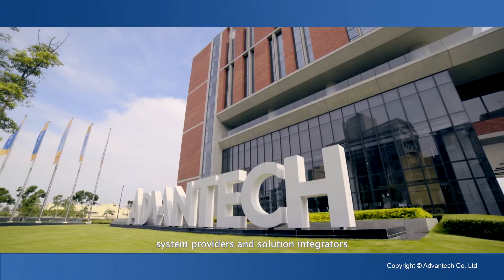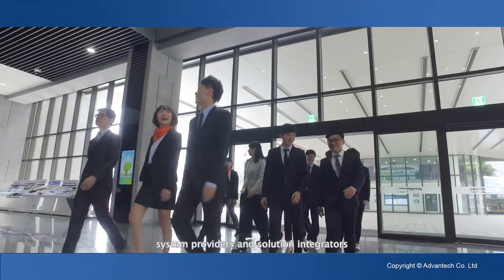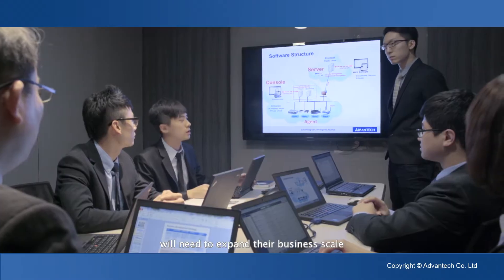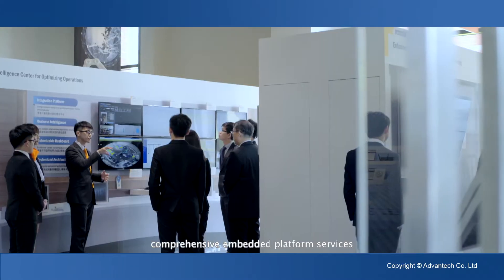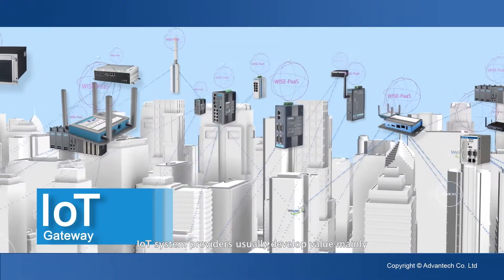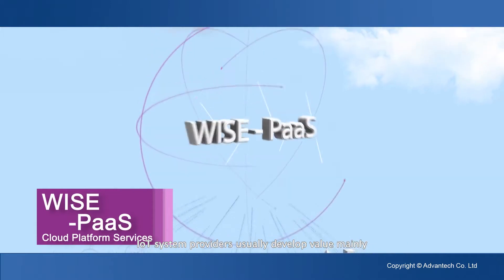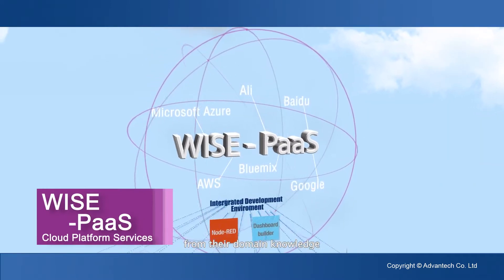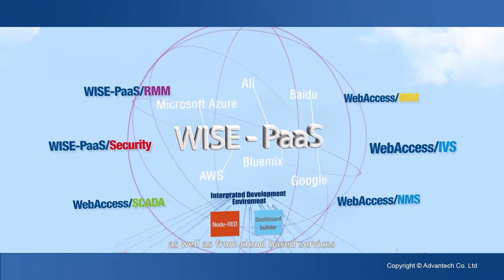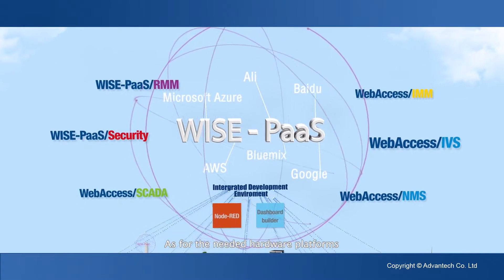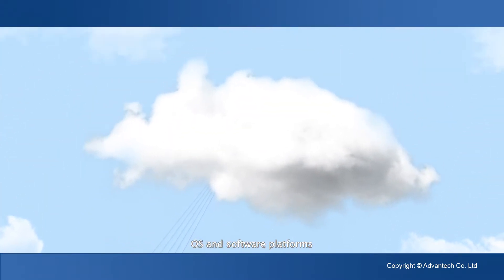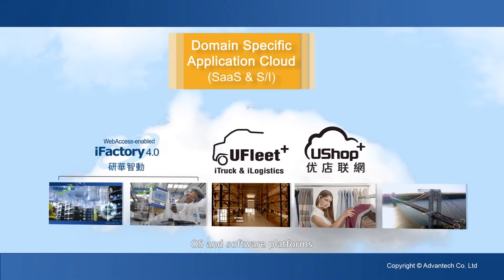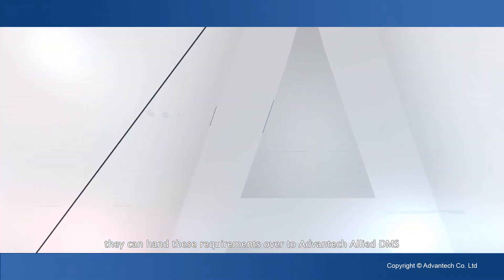In the IoT era, many of the system providers and solution integrators will need a broader scale and better embedded platform services. The system providers will be included in domain knowledge and cloud-based services. The system needs hardware platform and OS and driver level software platform, which can be provided by ADVANTECH Align DMS.